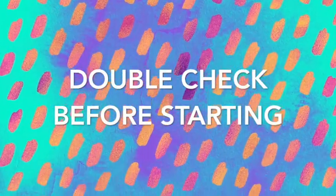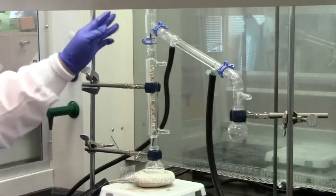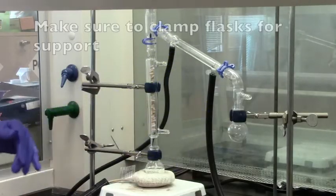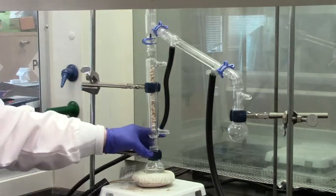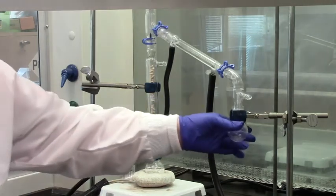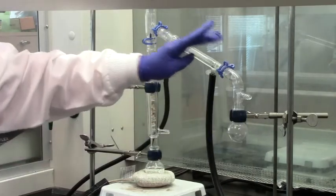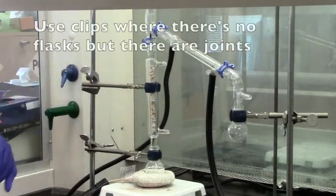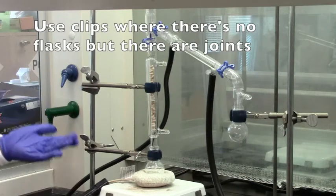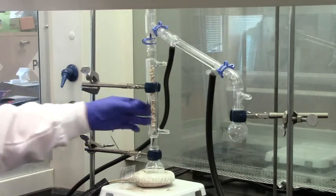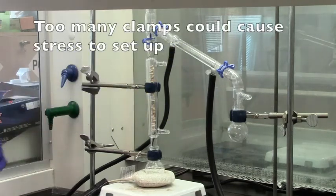A couple things that you should always double check, make sure that everything is clamped well, that there's no gaps anywhere. If you notice, I put clamps at the distilling flask and at the receiving flask. I've used these blue clips where there's no flask used. We don't really want to overuse the clamps, as I've mentioned before, because that can put strain or stress on this glassware, which can cause it to break later.